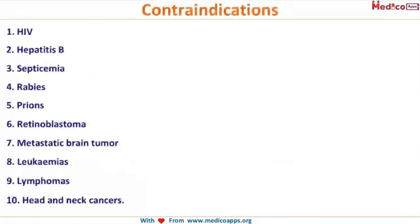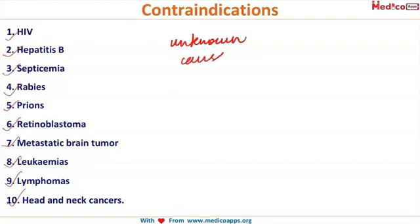There are certain absolute contraindications for corneal donation because certain diseases can spread from donor to recipient via the cornea. These include HIV, Hepatitis B, septicemia, rabies, prions, retinoblastoma (through seeding), metastatic brain tumor, leukemias, lymphomas, and other hedonic cancers. Additionally, corneas from donors with an unknown cause of death are not preferred for donation.